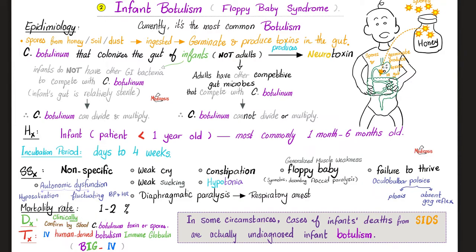Mortality rate is one to two percent. Diagnosis is made clinically and confirmed by finding the toxin or spores in the stool of the infant. Treatment: intravenous human-derived botulism immunoglobulin — known as BIG-IV — is given to the baby, whereas the horse-derived heptavalent antitoxin is given to adults.